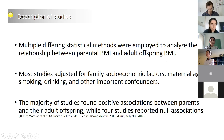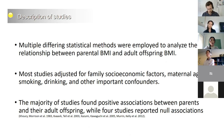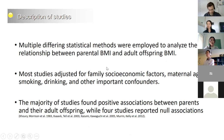Different statistical methods were employed to analyze the associations, and most studies adjusted for important confounders including socioeconomic factors, smoking, drinking, and parental age. The majority of studies found a positive association between parents and their adult offspring, but four studies reported no association.